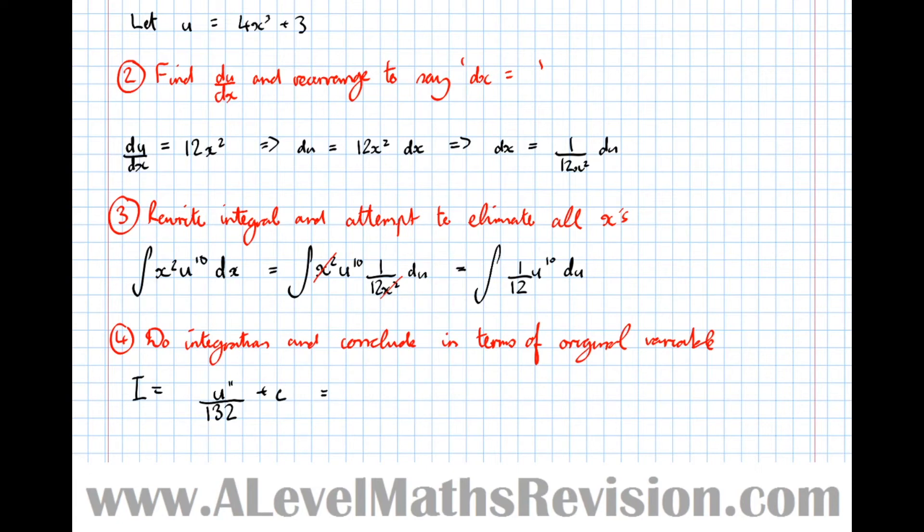And remember, in terms of the original variable, well, u was 4x cubed plus 3, so it's 1 over 132 times 4x cubed plus 3 to the power of 11, plus c, and there's our integration done.